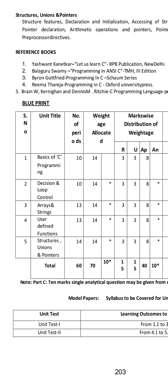Have a look at the blueprint. There are 5 units: basics of C-programming, decision and loop control from chapter 2, arrays and strings, user-defined functions, structures, unions, and pointers. This is the basic level C content for the EEE department — similar to CSE as well.